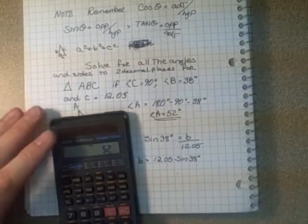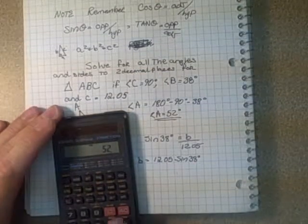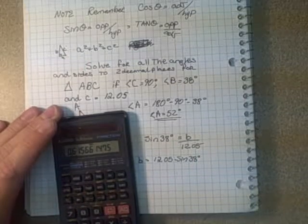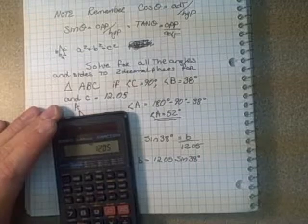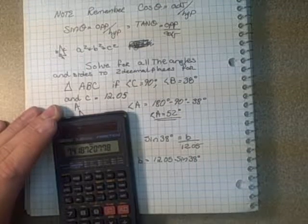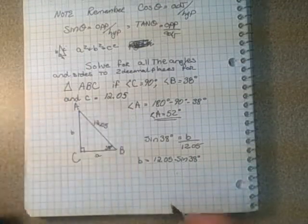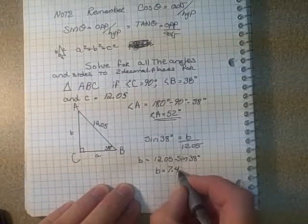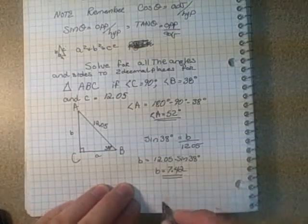Okay, so let's do that here. Clear that. 38 sine times 12.05, and then round it off to 2 decimal places, 7.42. B is equal to 7.42, and underline that.